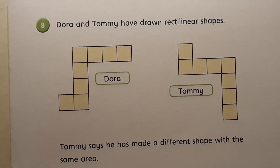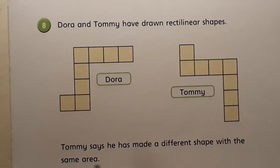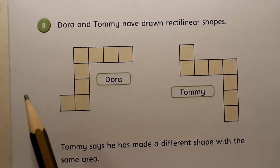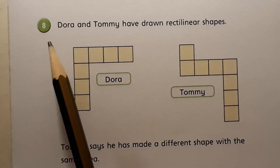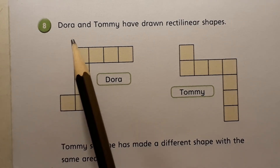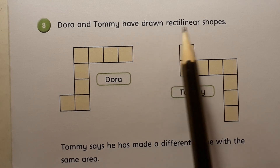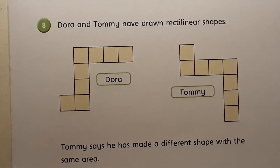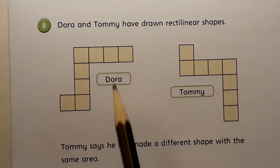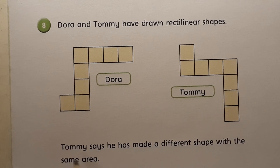I think I might have forgotten to hit pause, but we're going to carry on from where we are now. This is question number eight. It says: Dora and Tommy have drawn rectilinear shapes. Here is Dora's, here is Tommy's. Tommy says he has made a different shape with the same area. Do you agree with Tommy?